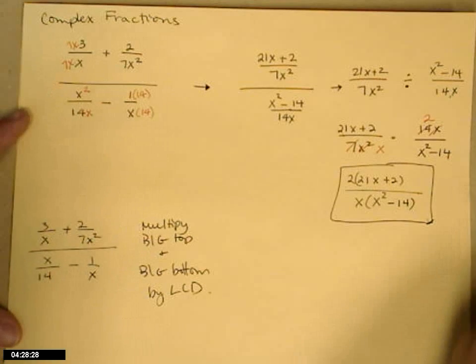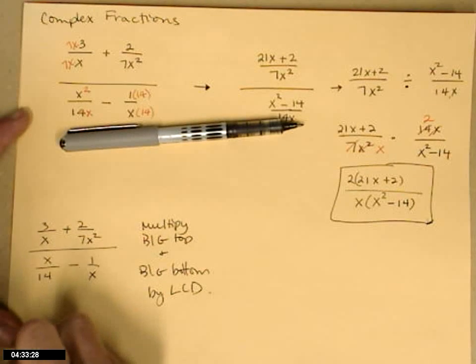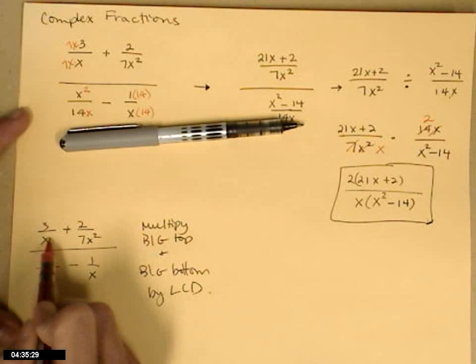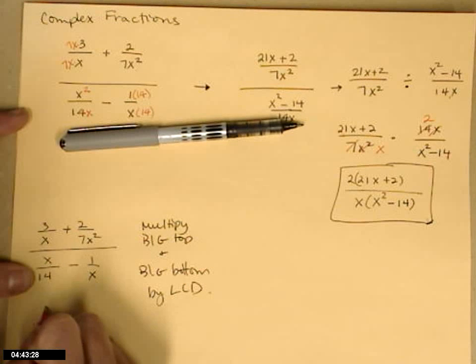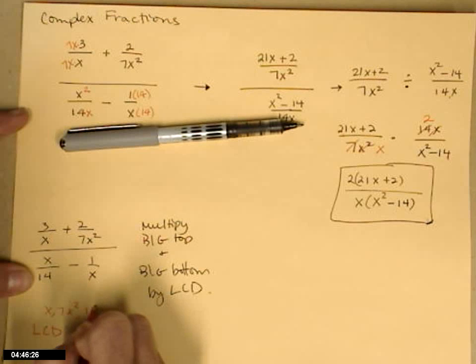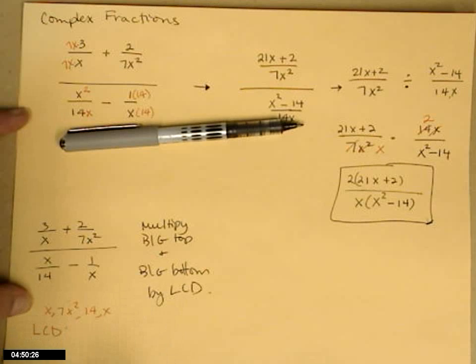So I'm going to look at all of the fractions here and decide what the LCD is. I'm going to need an x, I'm going to need 7x squared, but the x will be taken care of there. I need to have at least 14. So I'm looking at these pieces to get the lowest common denominator that all of these will work with.